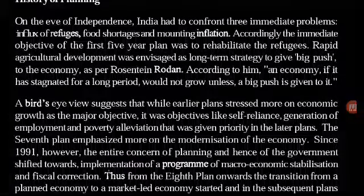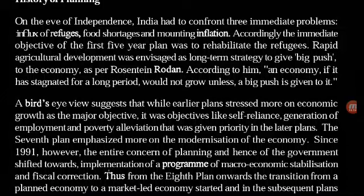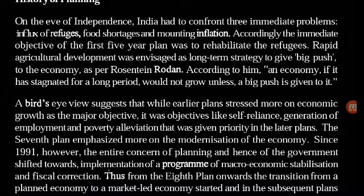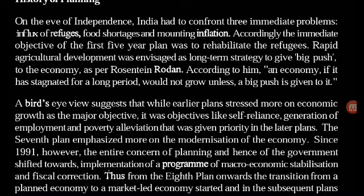On the eve of independence, India had to confront three immediate problems: influx of refugees, food shortages, and mounting inflation. Accordingly, the immediate objective of the first five-year plan was to rehabilitate the refugees. Rapid agricultural development was envisaged as a long-term strategy to give a big push to the economy, as per Rosenstein-Rodan — who argued that an economy stagnated for a long period would not grow unless a big push is given. Earlier plans stressed more on economic growth, while objectives like self-reliance, employment generation, and poverty alleviation were given priority in latter plans.